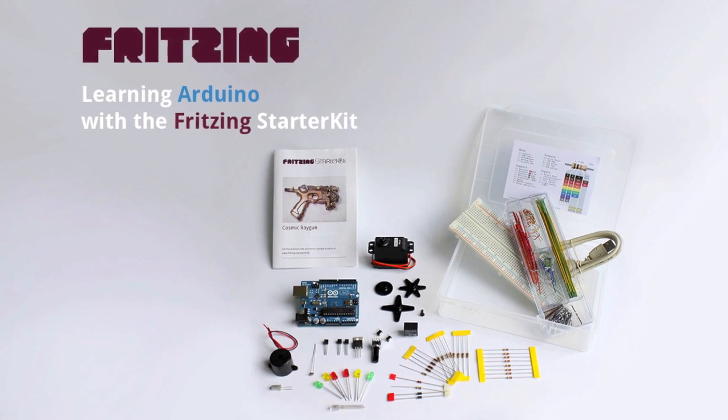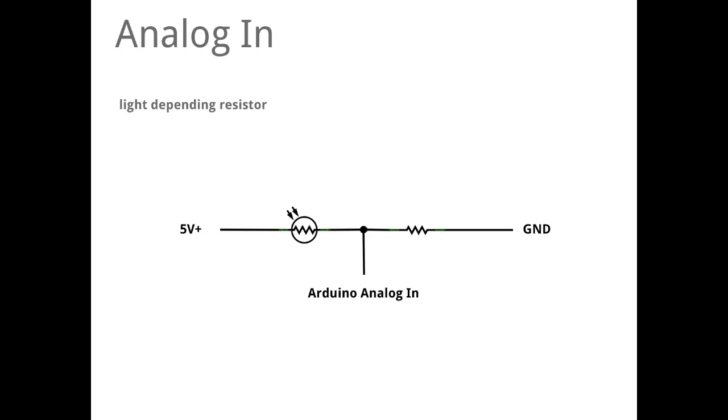Learning Arduino with Fretting Starter Kit by and with Stefan Herrmann. To use an analog sensor, we have to understand again how Arduino is sensing things in the analog way.